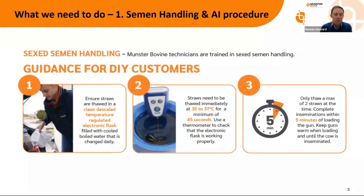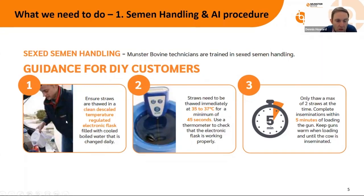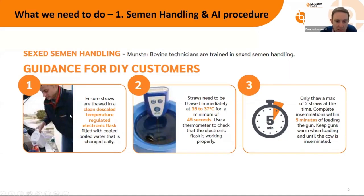There are three things to consider when stacking the odds in your favour as the herd owner. The first is that because the sex product is a bit more fragile, we need to be more careful about how we handle it — right through from all the semen handling, making sure it's under liquid nitrogen. When you're going to use it, it needs to be thawed in a descaled flask. For any DIY customers, get some descaler products like Ica, descale your thawing flask and give it a good rinse out — limescale harbors bacteria. Use cool boiled water and change the water every day in the flask.